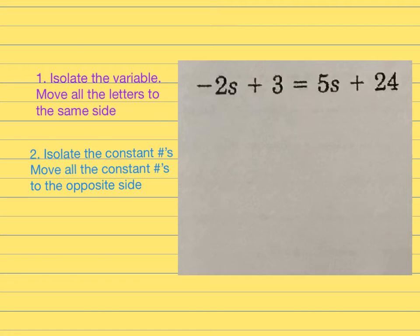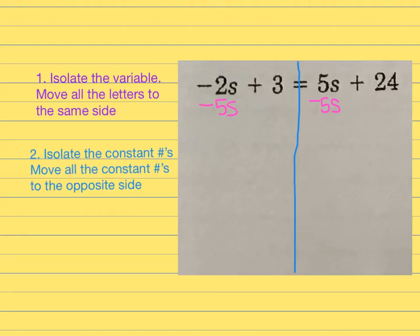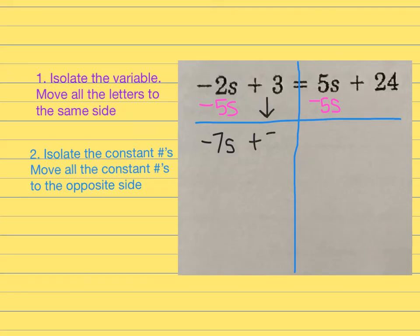Now we're going to look at another one. I draw a line down the center to separate left and right. My first step is to get all variables on one side. To get rid of 5S, the opposite is negative 5S. Subtracting 5S from both sides: negative 2 minus 5 — when both are negative, we add them — gives negative 7S. Then I bring down plus 3 equals and bring down plus 24.